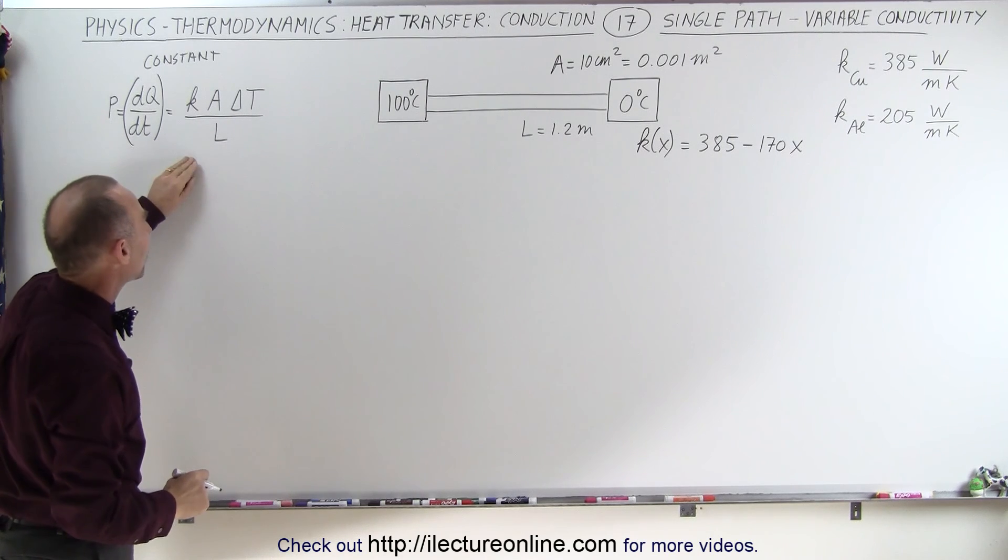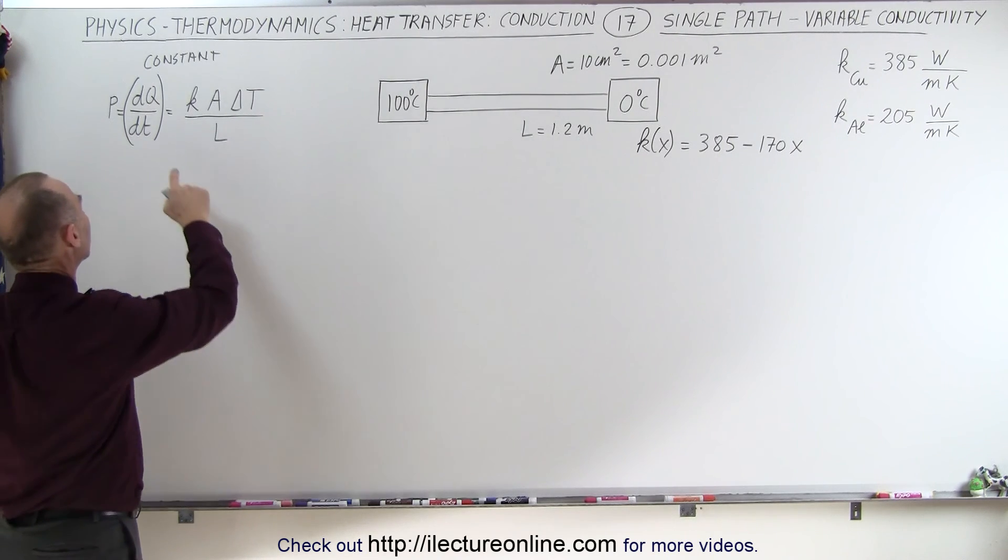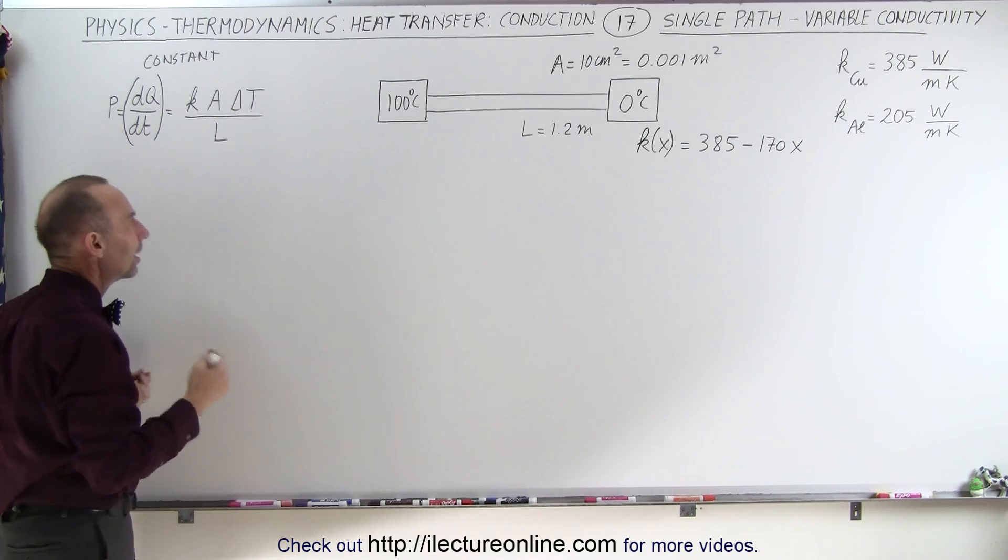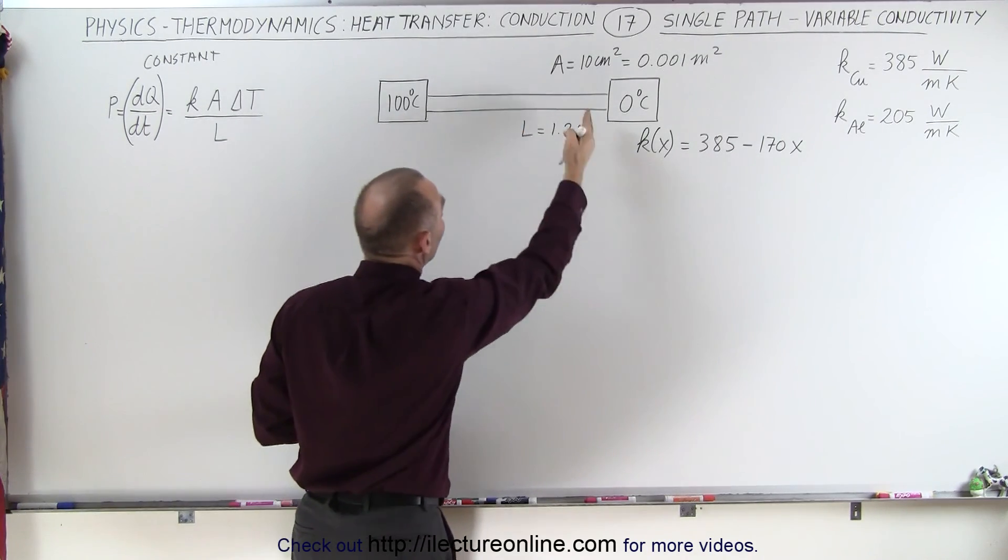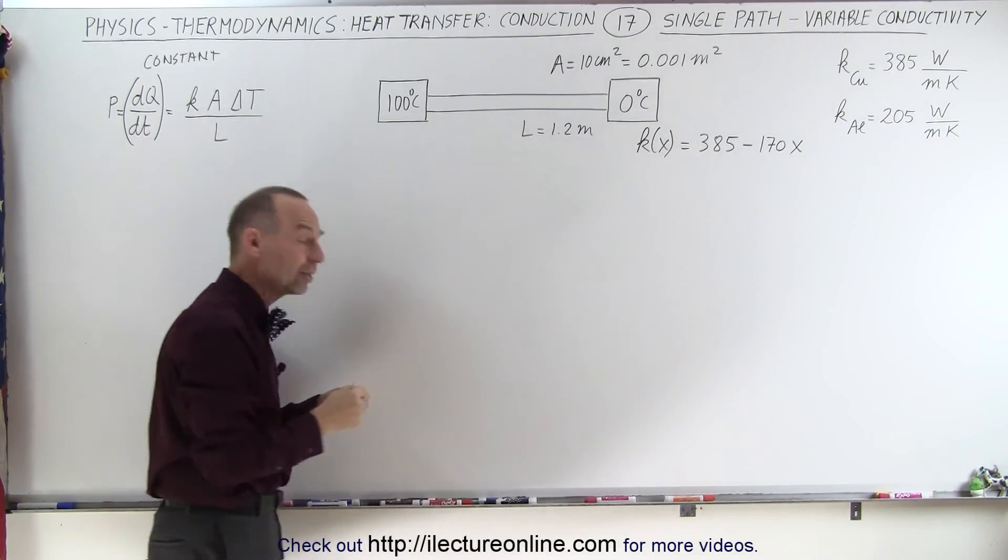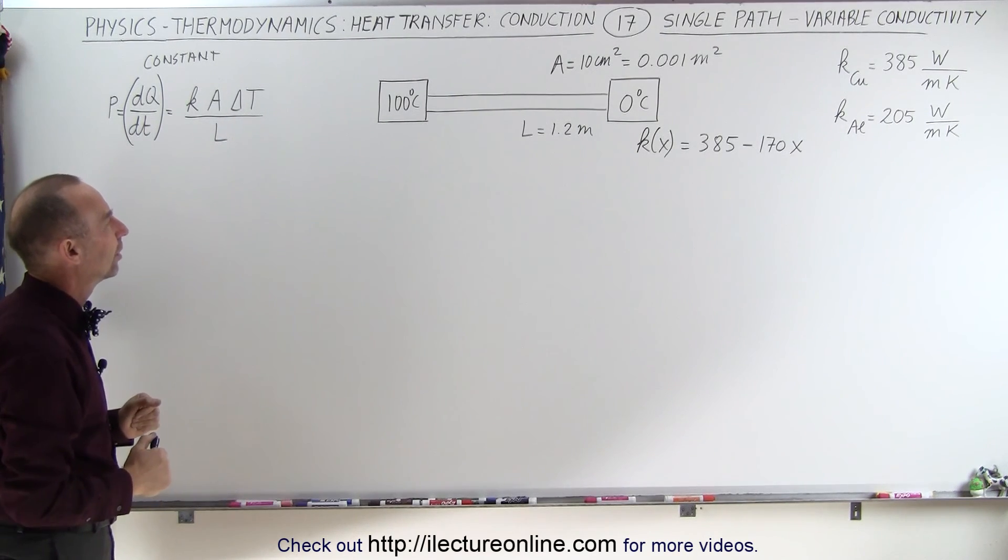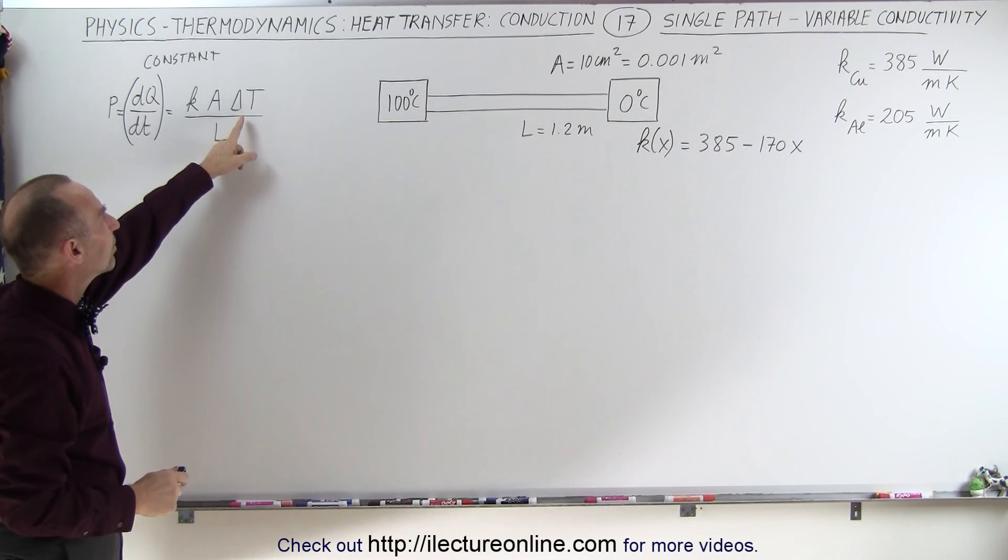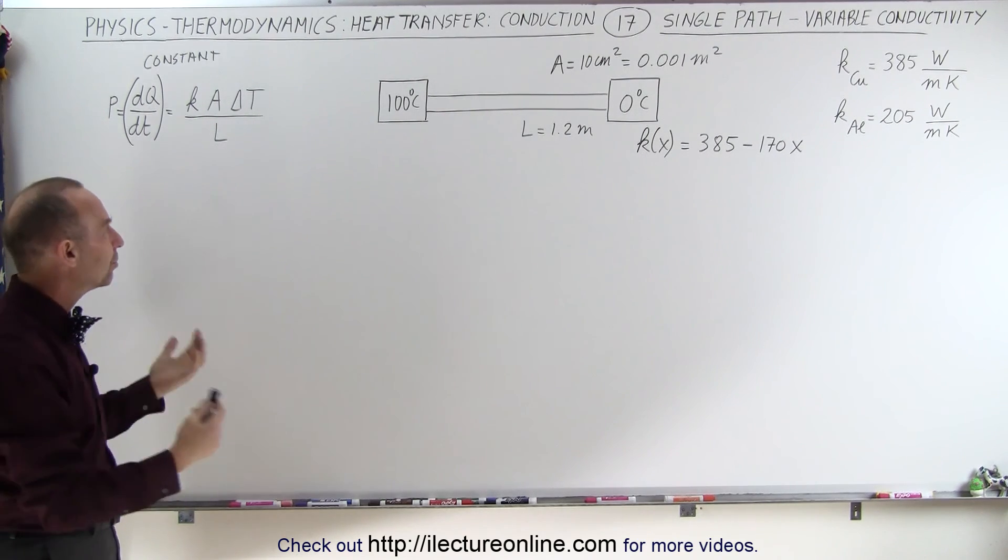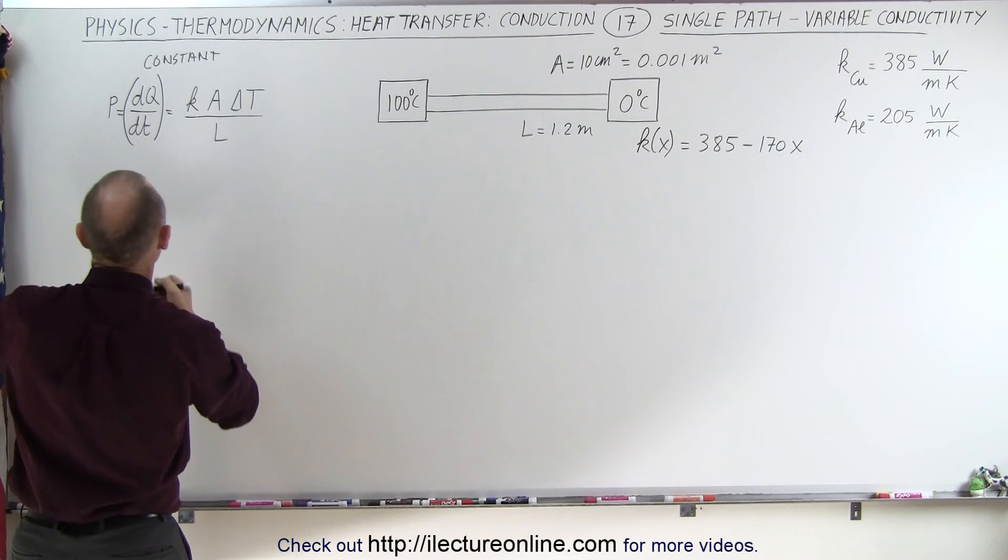We're going to use the same equation as before, and again, the dQ/dt is going to have to be constant because it cannot change as heat travels across it. Even when the heat conductivity changes, dQ/dt has to be constant. But that means that the delta T will change as you travel across, which means we're going to have to rewrite the equation as follows.